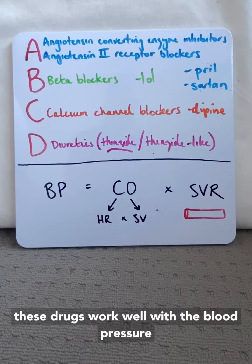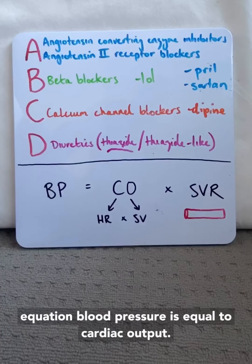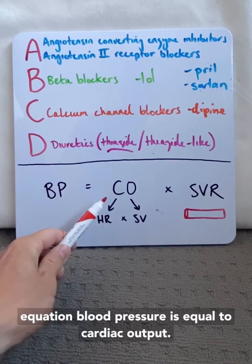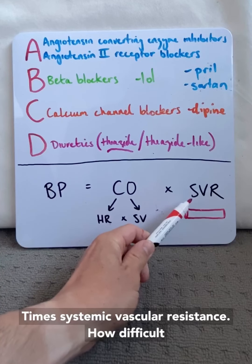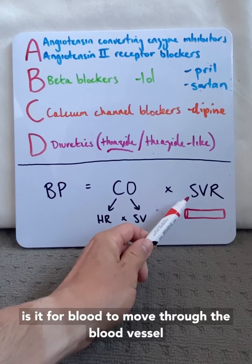Now how do all these drugs work? Well, look at the blood pressure equation. Blood pressure is equal to cardiac output, that's the amount of blood ejected every minute, times systemic vascular resistance. How difficult is it for blood to move through the blood vessel?